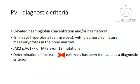According to WHO 2022 hematolymphoid neoplasms, increased red cell mass is no longer required for the diagnosis of polycythemia vera.